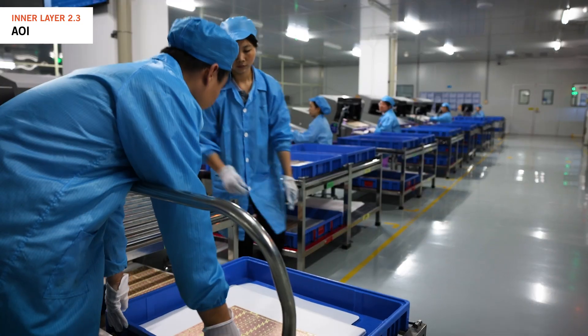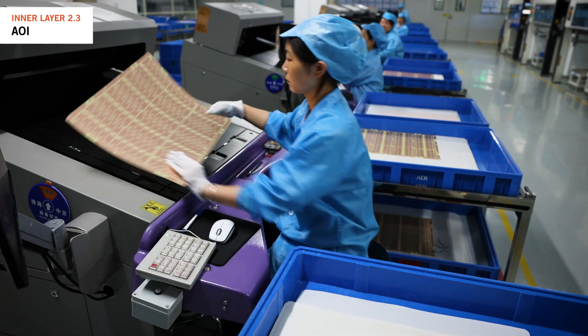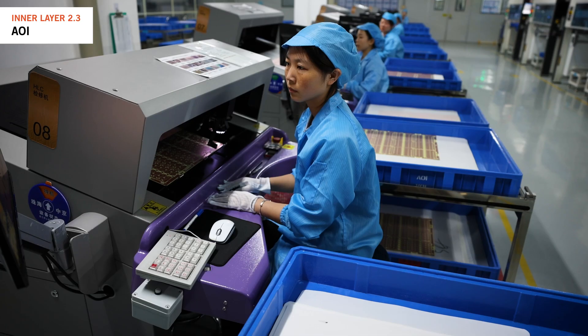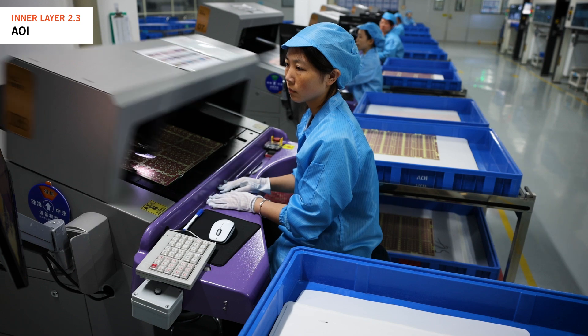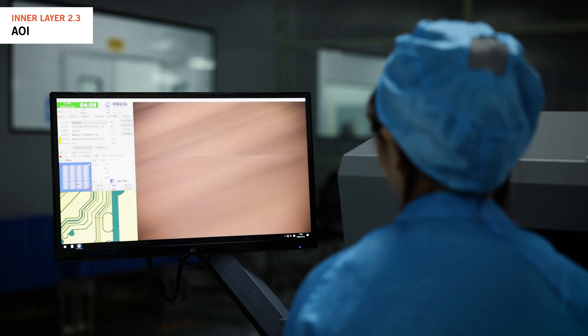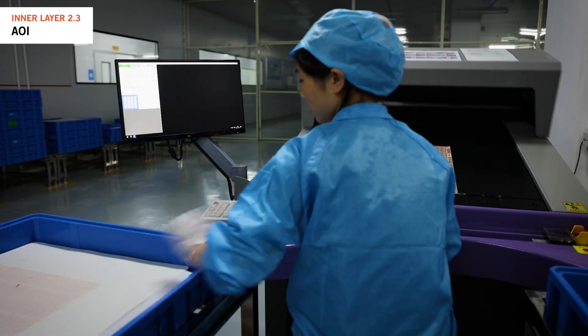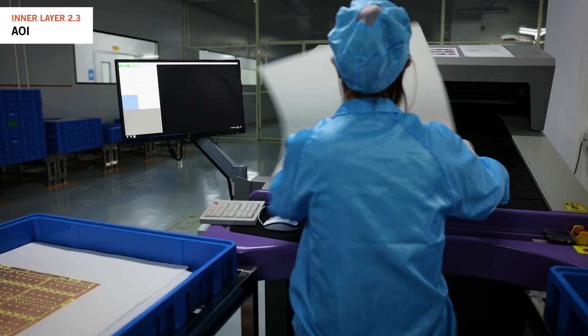The second stage is the verification stage where operators check if concerns found during scanning are acceptable or not. They inspect the circuitry for issues like shorts, opens, or damage, ensuring that the conductor width and spacing meet customer requirements and IPC tolerances.